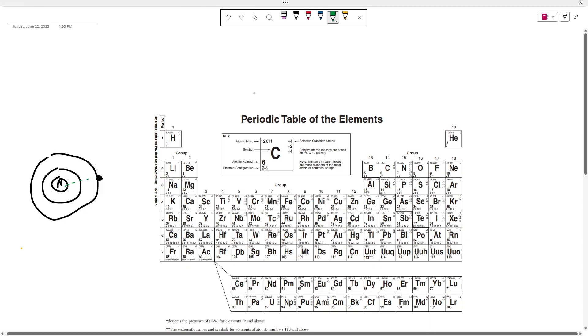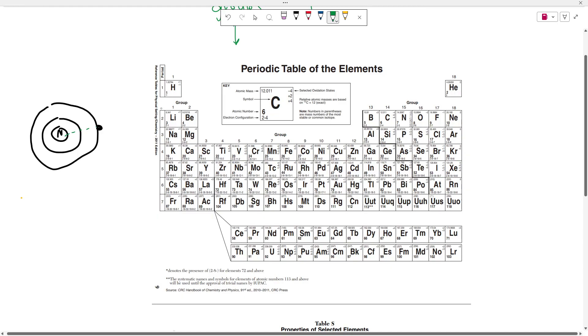All right, so let's talk about this trend. We know that elements are divided into groups, which are the columns, and periods, which are the rows. So if we look at a group, let's look at group one. As we go down this group, we see that the electron configuration changes, right? Hydrogen has one electron shell that has one electron. Lithium has two electron shells, one with two electrons, one with one electron. Sodium has three electron shells. Potassium has four electron shells. Rubidium has five electron shells.